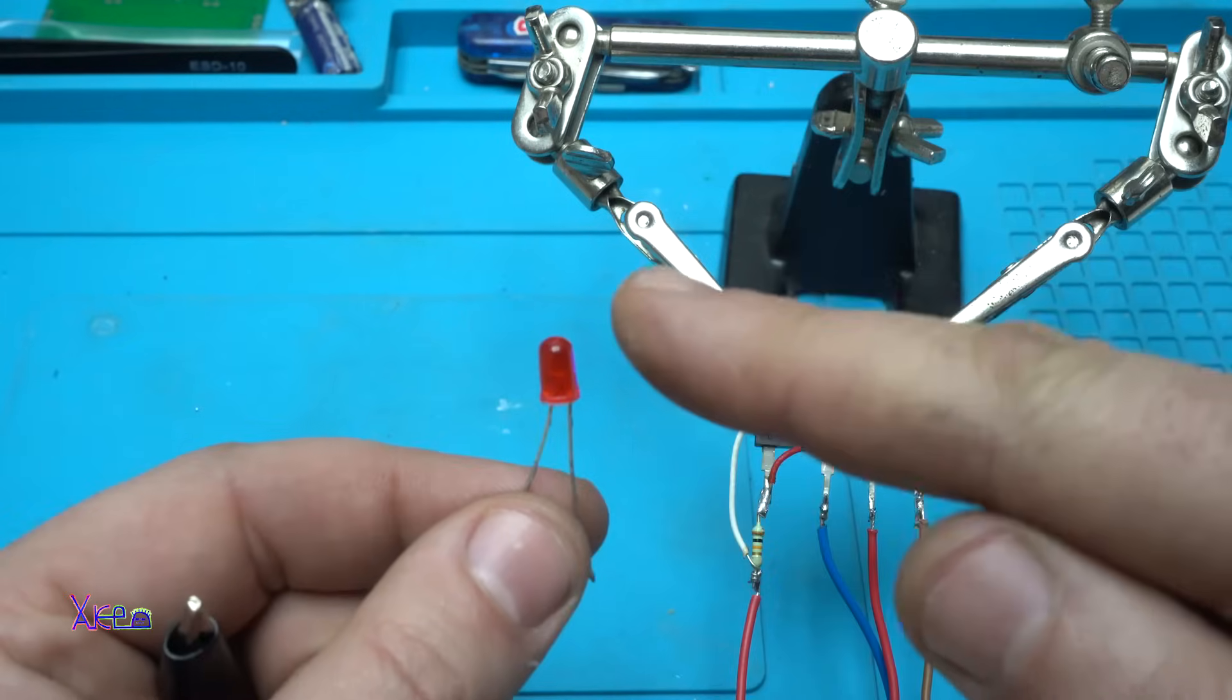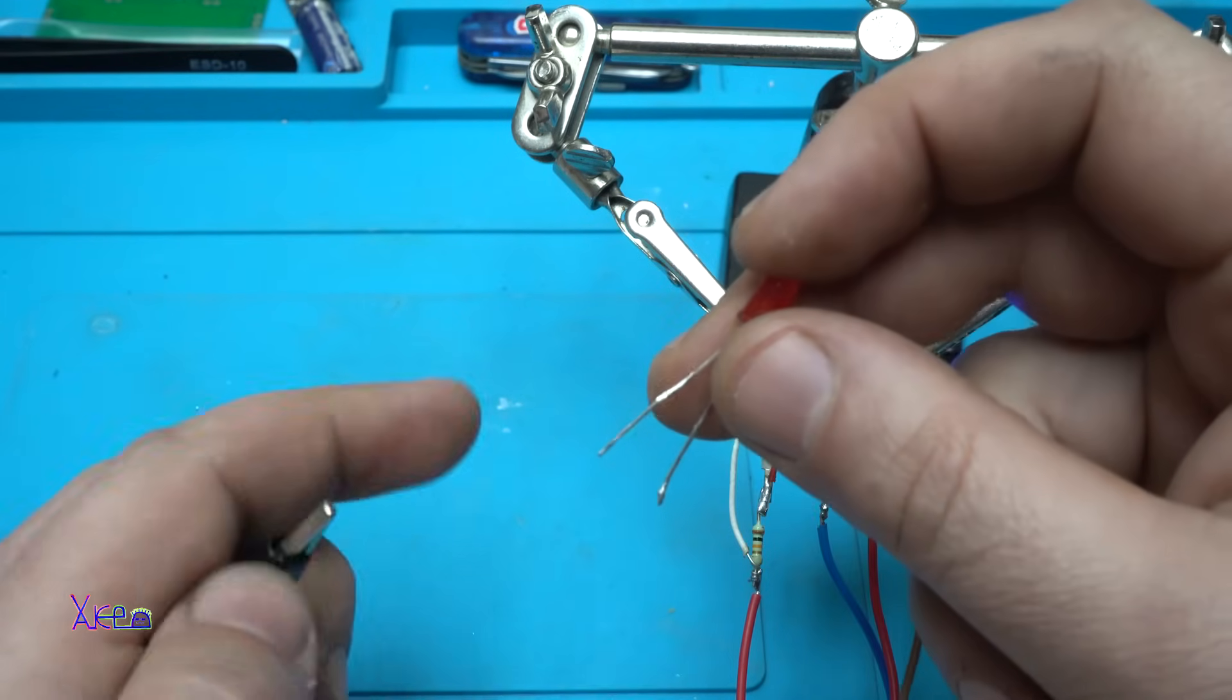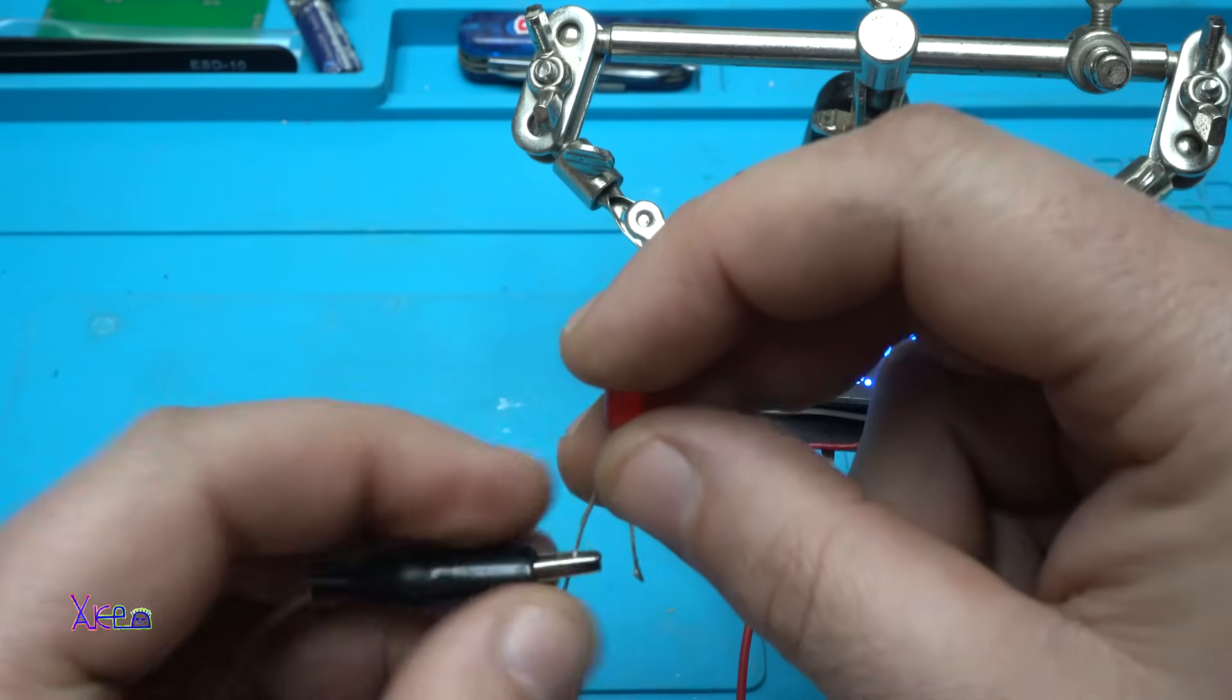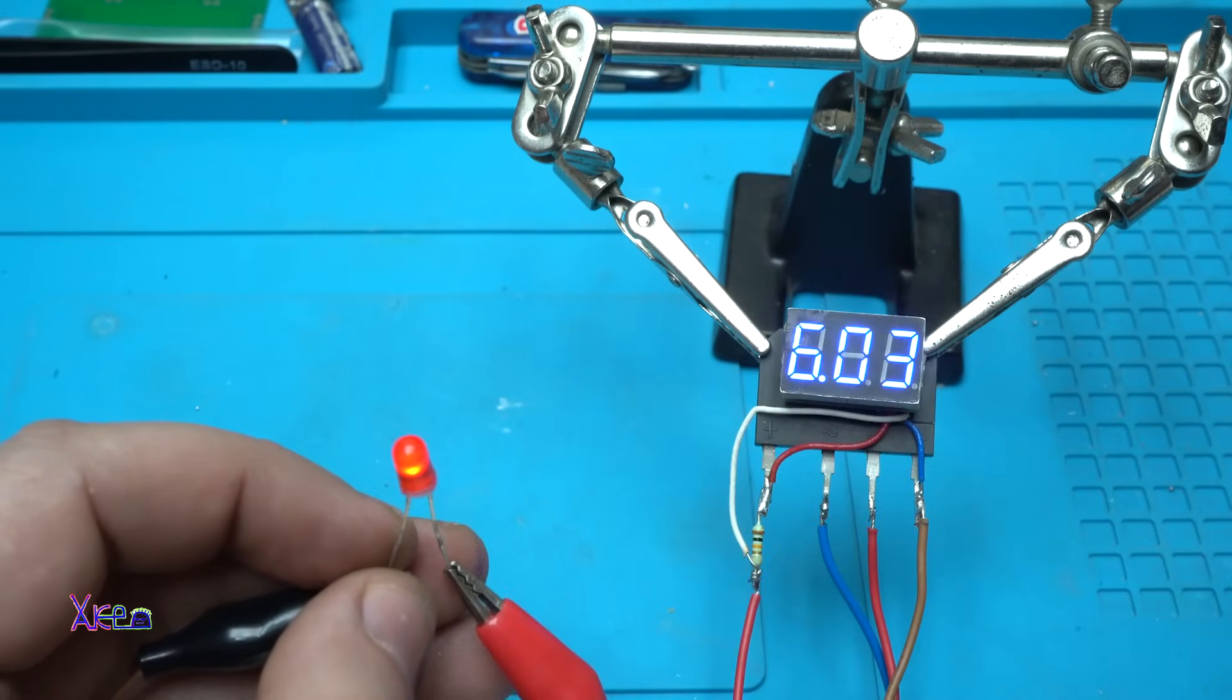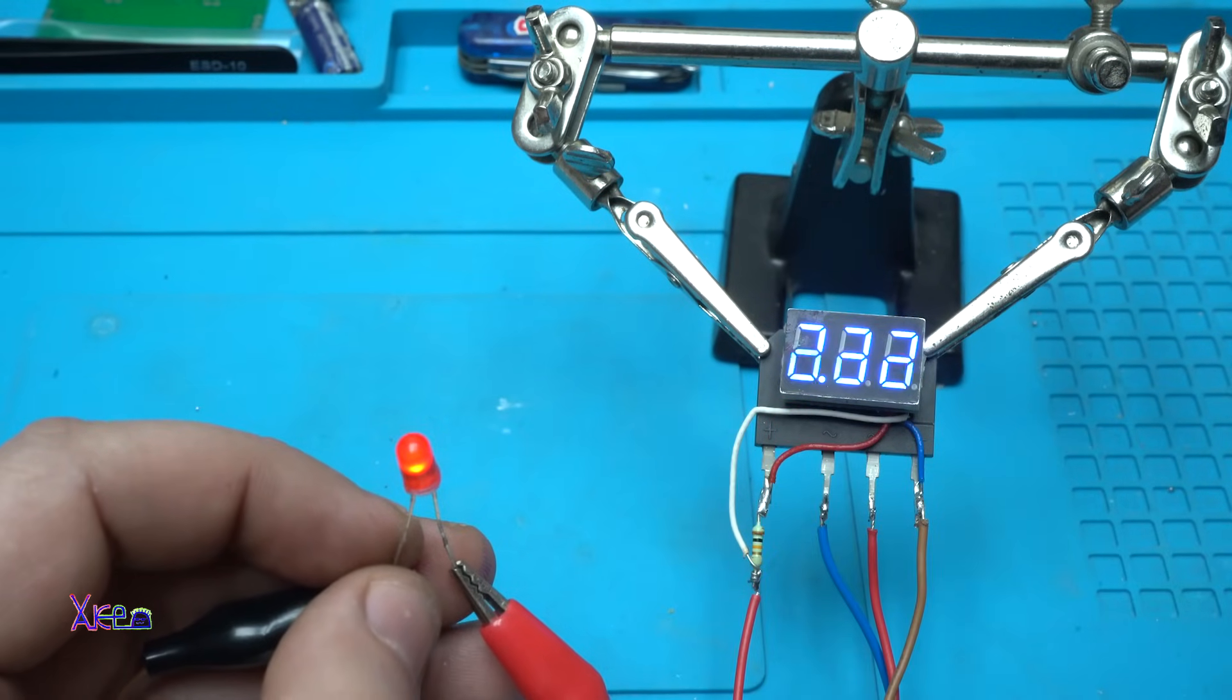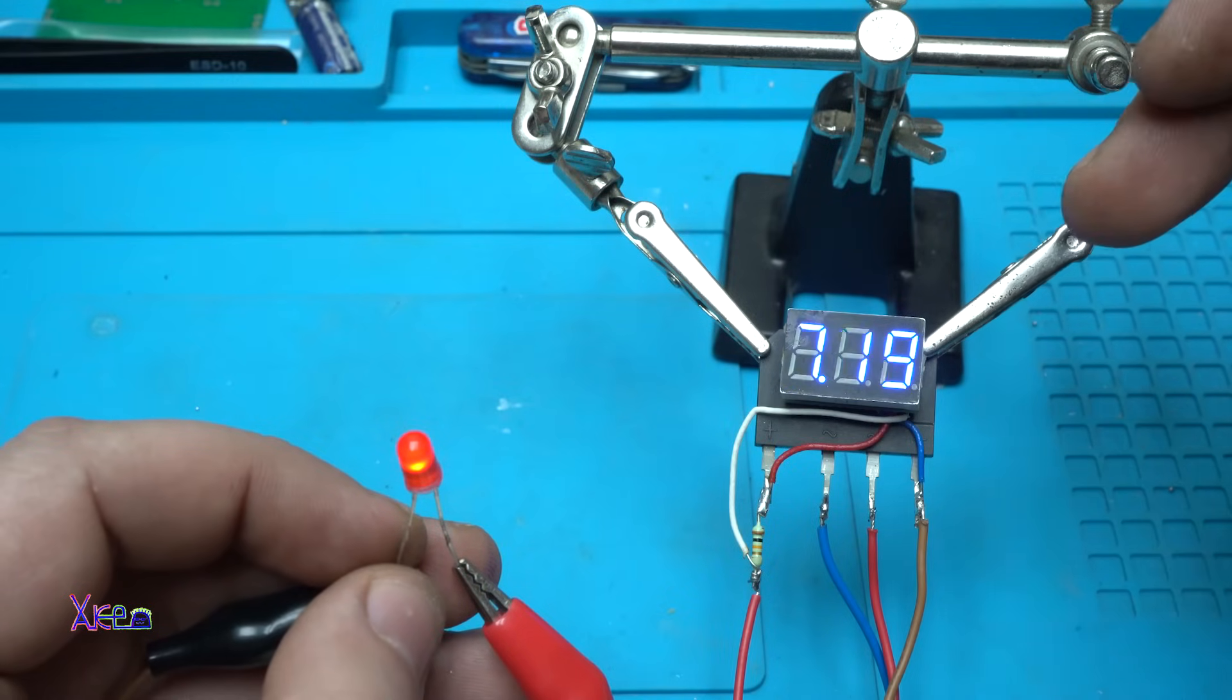Let's measure this self-blinking LED. Whoa, what is it doing? It's reading different voltages.